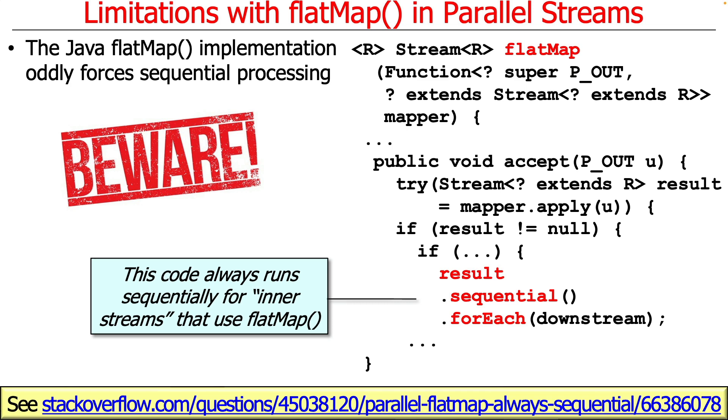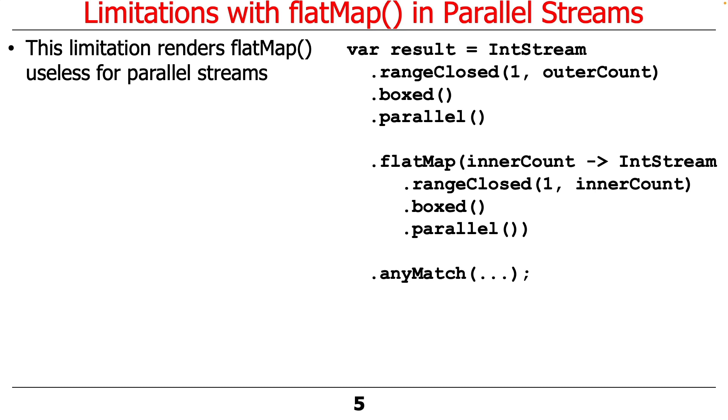So we talked about before there's problems with flatMap. It makes things sequential. And that basically makes it useless for parallel streams, which is really annoying.